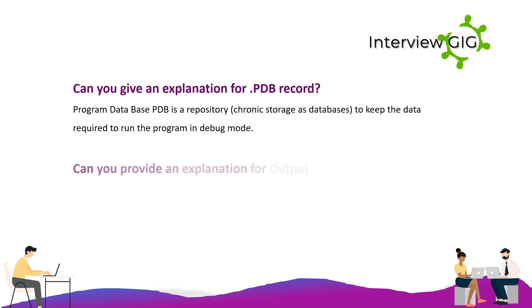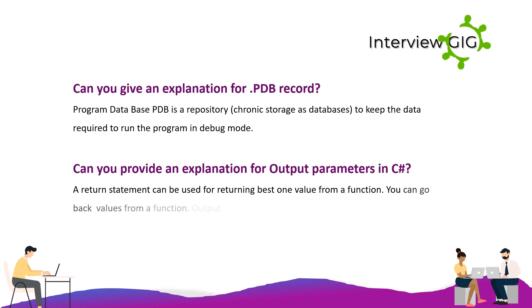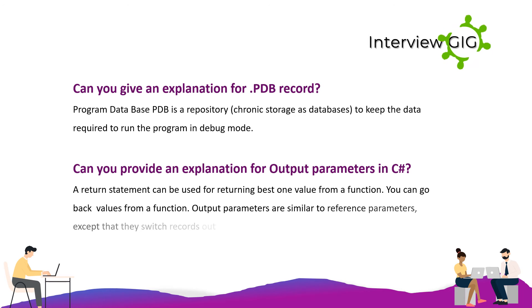What are output parameters in C#? A return statement can return only one value from a function. Output parameters allow you to return multiple values from a function. Output parameters are similar to reference parameters, except that they transfer data out of the method rather than into it.